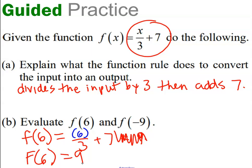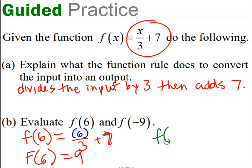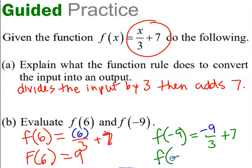Again, you're not isolating f — f is the name of the function and it's telling you the directions. Now let's try the other one. What if the input was negative 9? We're going to follow the same rule. If I go to function f and input a negative 9, I'm going to divide it by 3 and add 7. Negative 9 divided by 3 is negative 3, and negative 3 plus 7 is 4. So if you go to function f and put in a negative 9, the answer is 4.